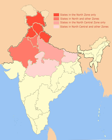Dachigam National Park is a higher altitude national reserve in the state of Jammu and Kashmir that ranges from 5,500 to 14,000 feet above sea level. It is home to the Hangul, also called the Kashmir stag. Great Himalayan National Park is located in Himachal Pradesh and ranges in altitude from 5,000 to 17,500 feet. Wildlife resident here includes the snow leopard, the Himalayan brown bear and the musk deer.